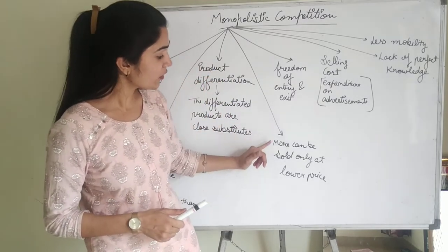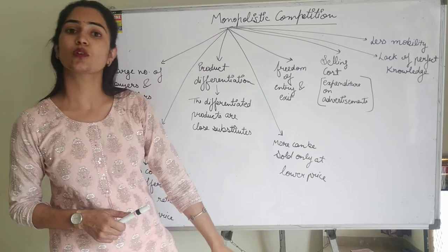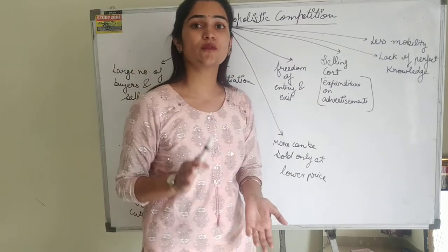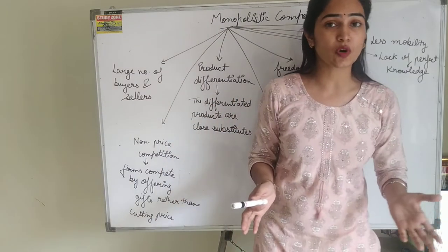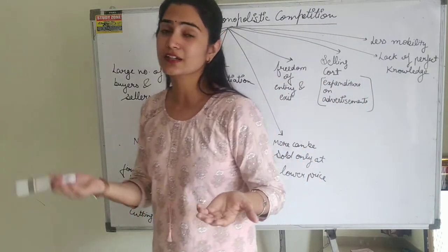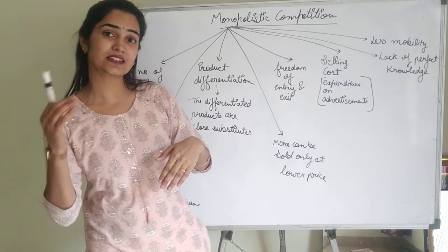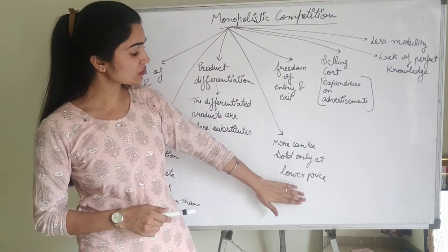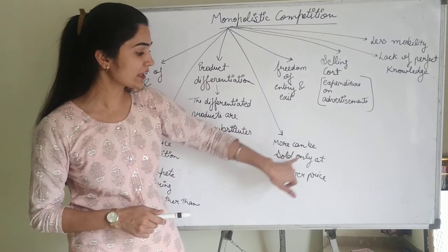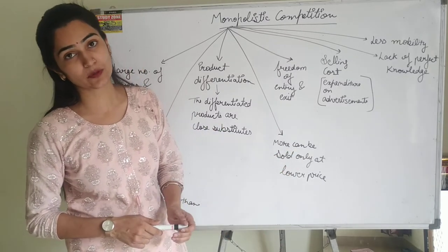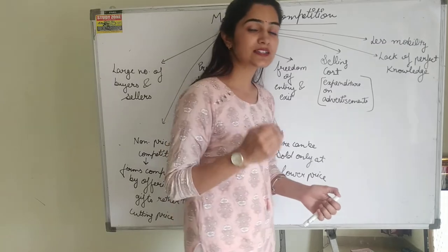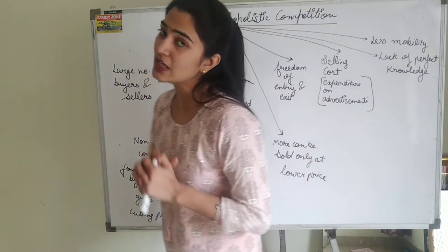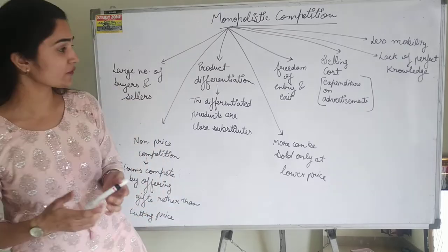More can be sold only at a lower price. In monopolistic competition, the law of demand will also apply. The law of demand states: if the price increases, demand will decrease; and if the price decreases, demand will increase. So in monopolistic competition, more can be sold only at a lower price. If a seller needs to sell more commodities, he has to lower the prices — then only he can sell more of the commodity.